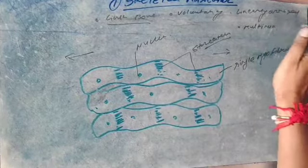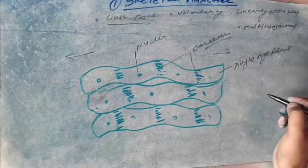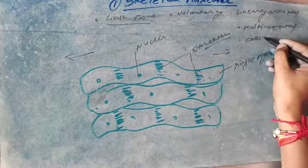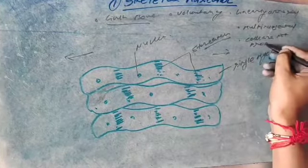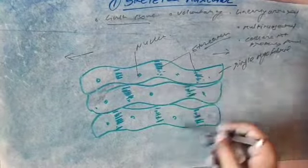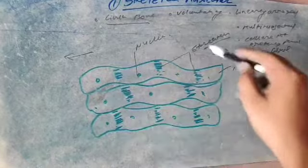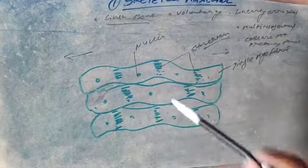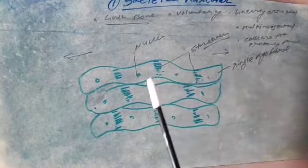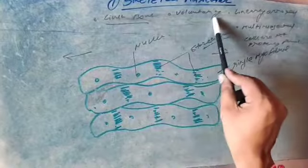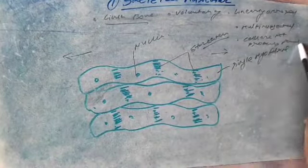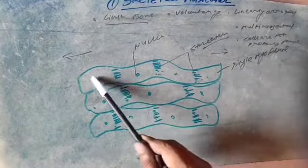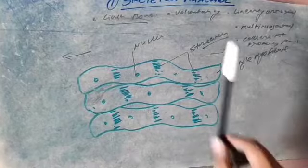Skeletal muscular tissues are multinucleated. The cells are not properly fused — these are different fibers of skeletal muscles which collectively form the single skeletal muscle. The basic key concepts: these muscles help to link the bones, they are voluntary in nature, linearly arranged, multinucleated, and cells are not properly fused.